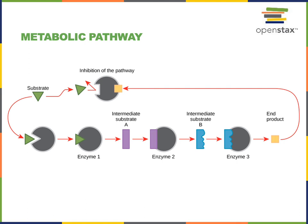You'll notice that the end product then binds to enzyme number one in order to inhibit this metabolic pathway. Once enough of the end product has been made, we don't need to convert more substrate into intermediate substrate A and intermediate substrate B, so the end product will inhibit the first enzyme in the metabolic pathway.